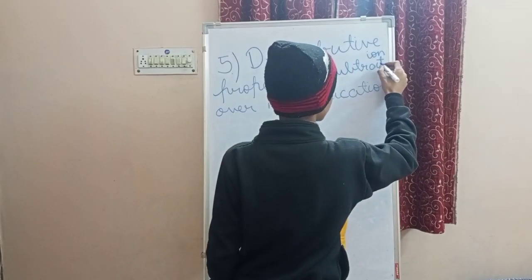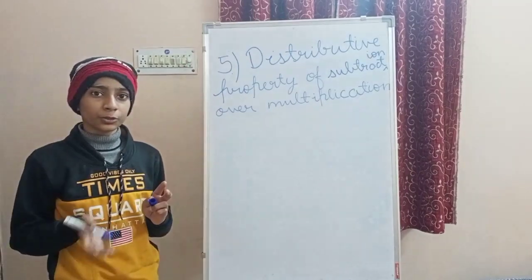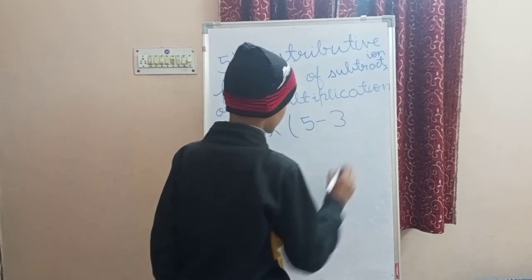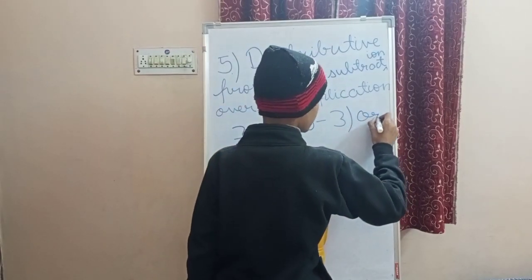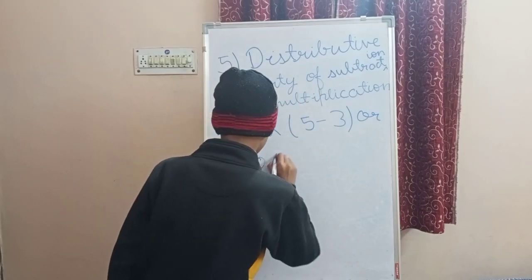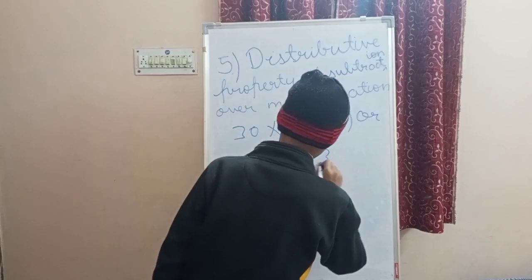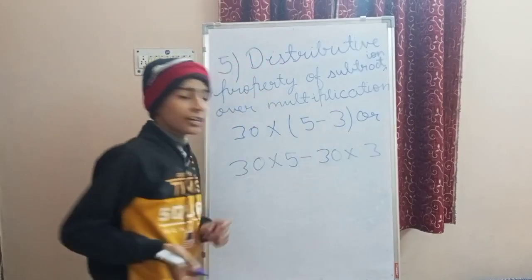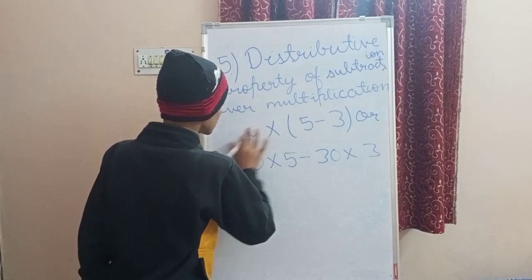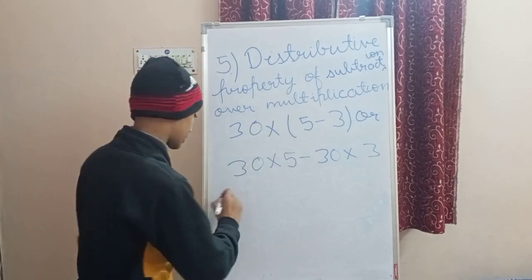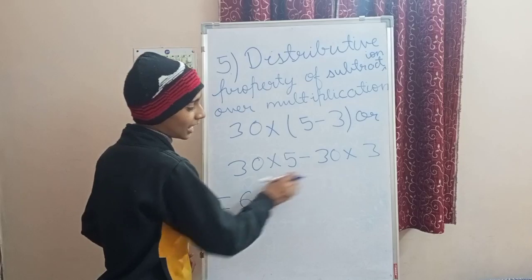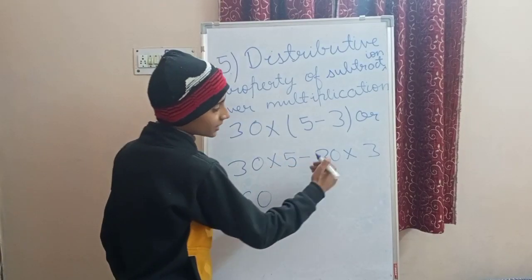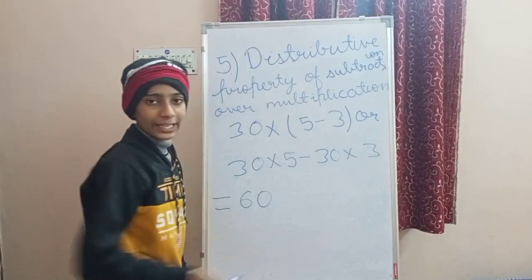Now the distributive property of subtraction over multiplication. For example, 30 into 5 minus 3 can also be written as 30 into 5 minus 30 into 3. Solving the first way: 5 minus 3 is 2, and 30 into 2 is 60. For the second way: 30 into 5 is 150, minus 30 into 3 which is 90, and 150 minus 90 is also 60.